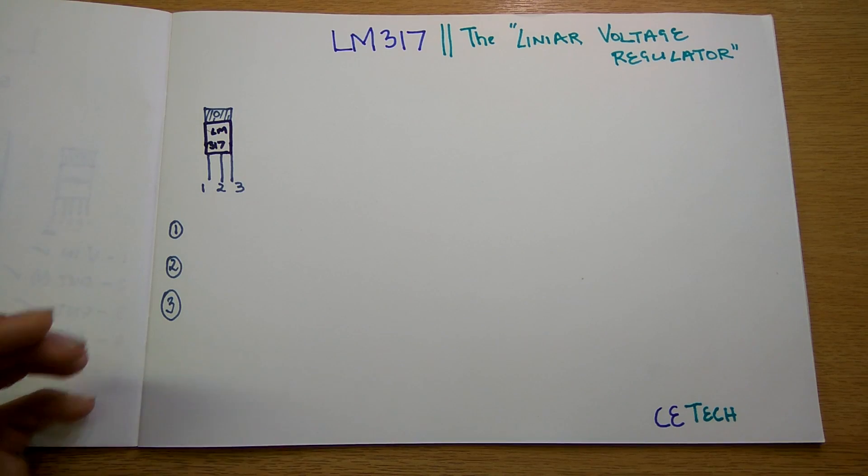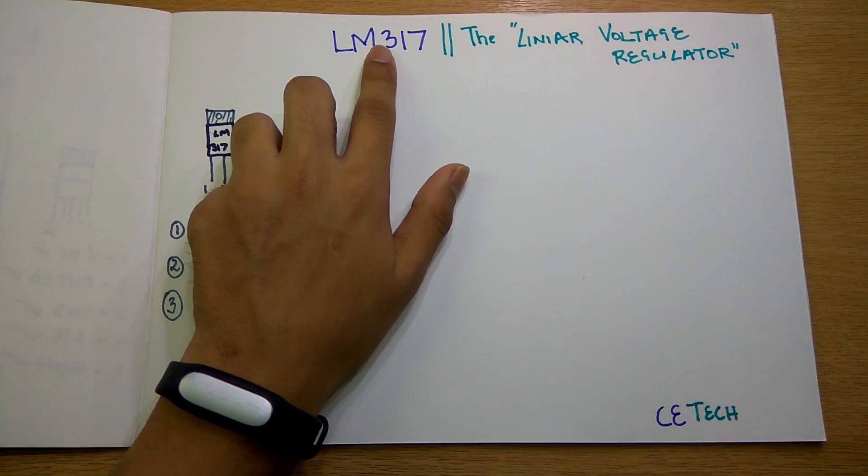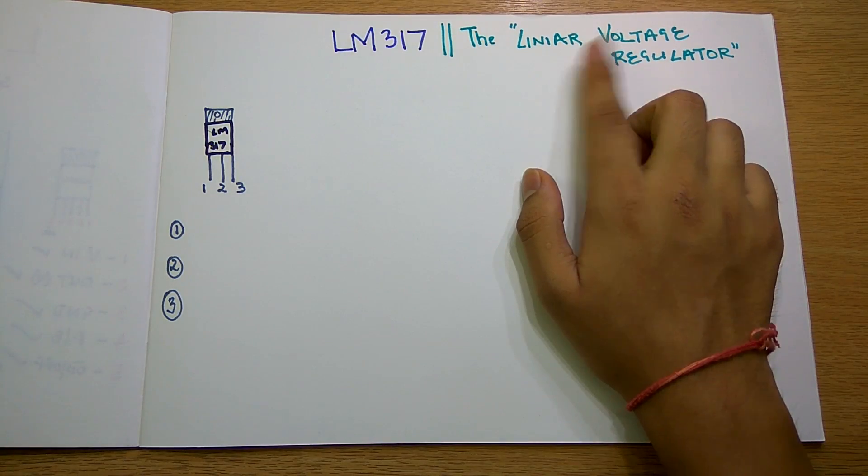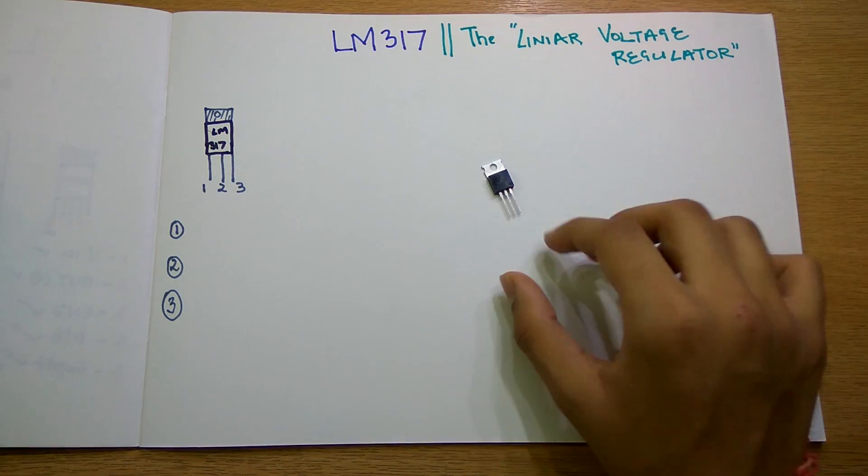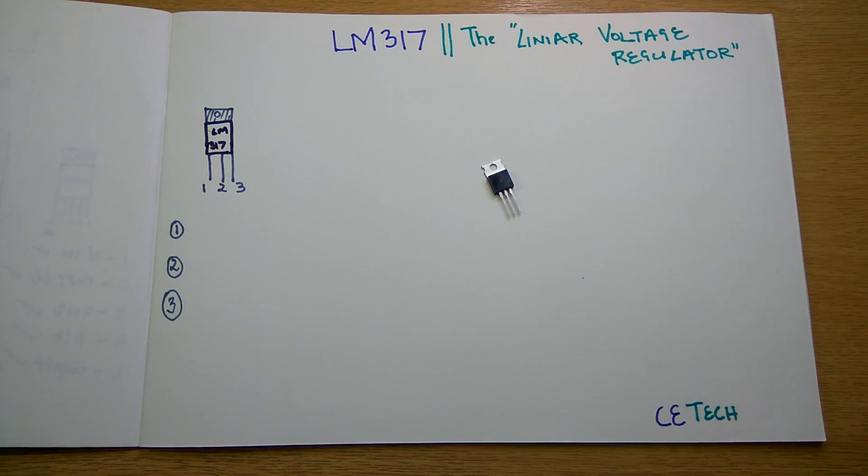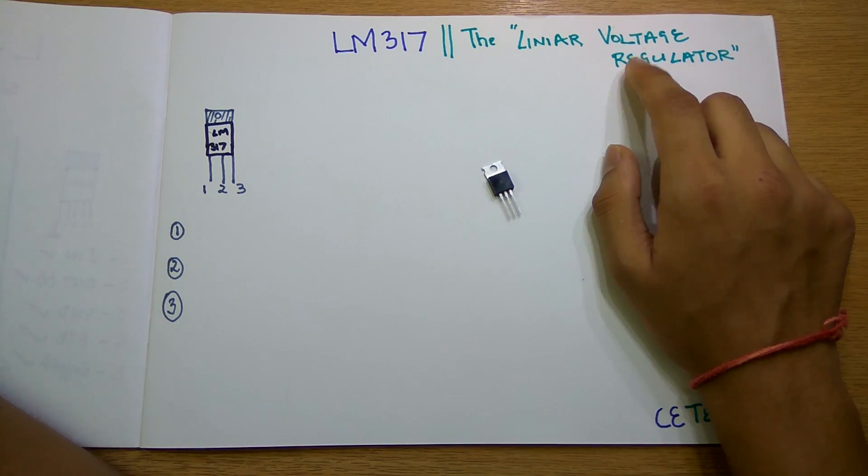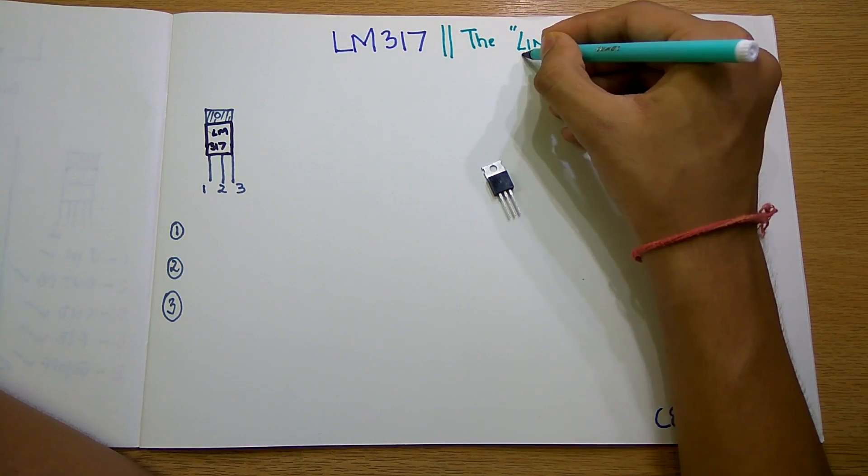Hey what is up guys, Akars here back with another video. Today we are going to talk about the LM317 which is popularly known as the linear voltage regulator. This is a 3-pin semiconductor device which is used as a voltage regulator, or instead of linear voltage regulator, I would prefer this to be called variable voltage regulator.